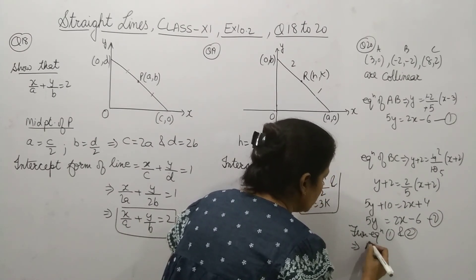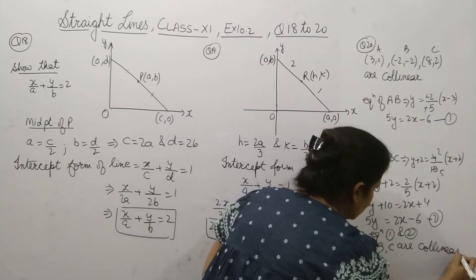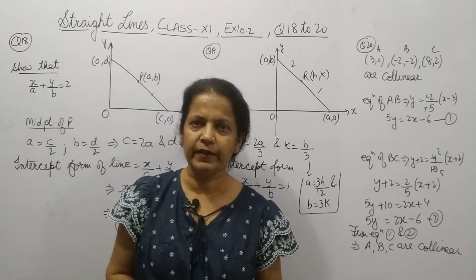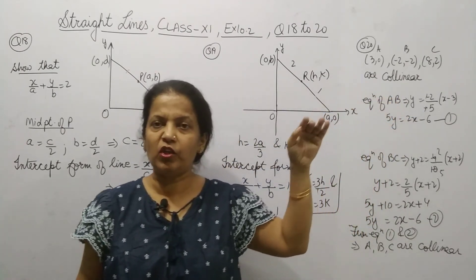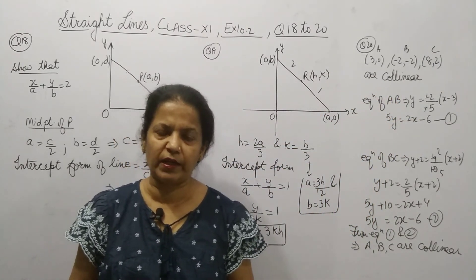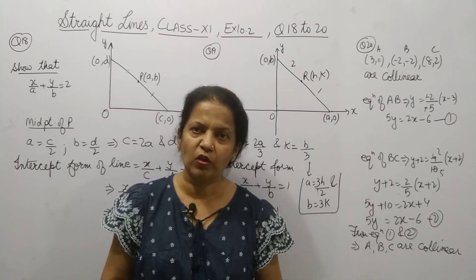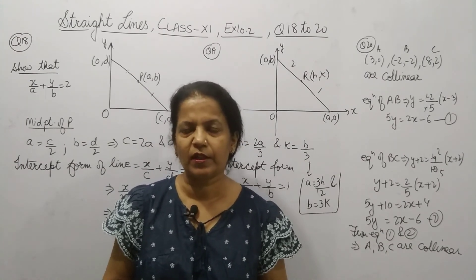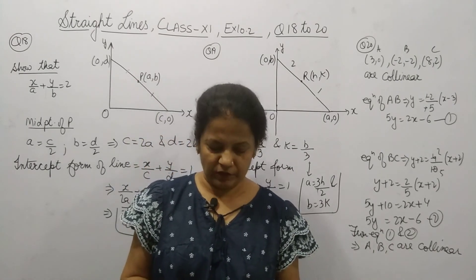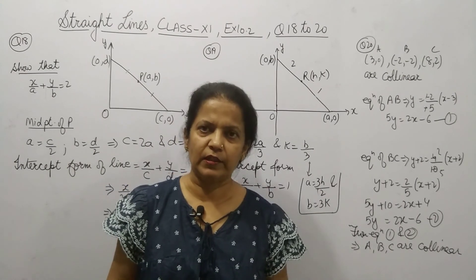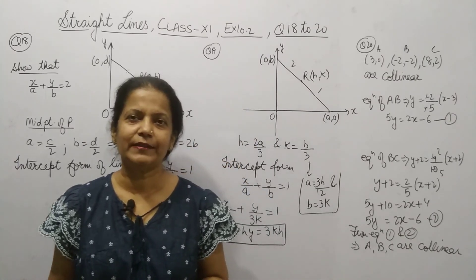From equation 1 and 2 we get that points A, B, C are collinear. Is it clear? If in the question it is not asked to use the equation of the line to prove collinearity, then you can also do it by finding out their slopes, as we did in the previous exercise. If the slopes are equal, then the points are collinear. That's all for today. Thank you and have a nice day.